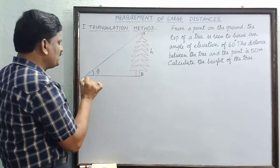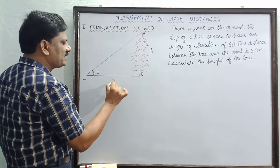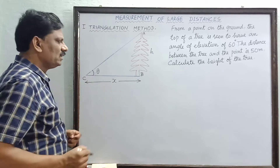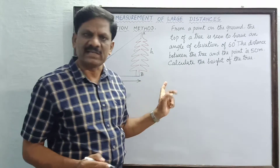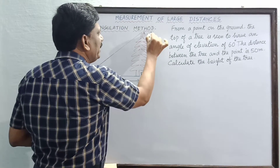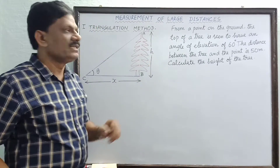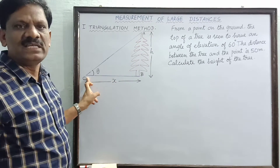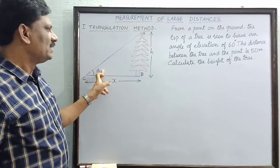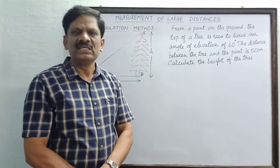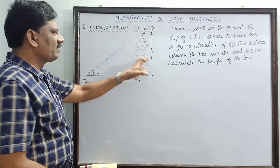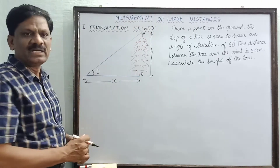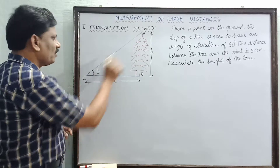This angle of elevation is taken to be theta. The point of observation C is at a distance x from the bottom of the tree, namely B. So the distance BC is equal to x, the height AB is equal to h, and the angle subtended by the tip of the tree A with the point of observation C is theta. From this we want to find the height of the tree — or the distance of the tree — anything can be found.